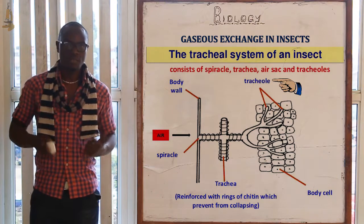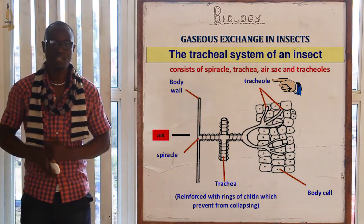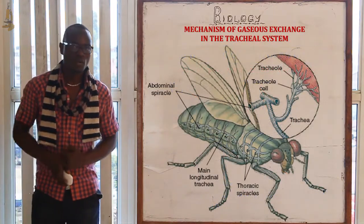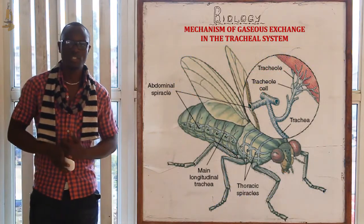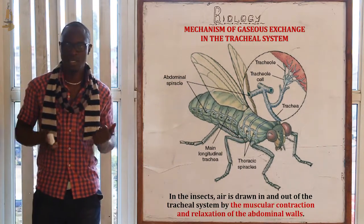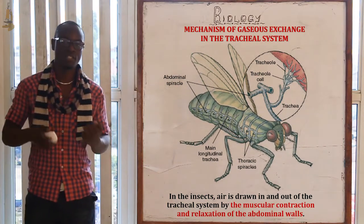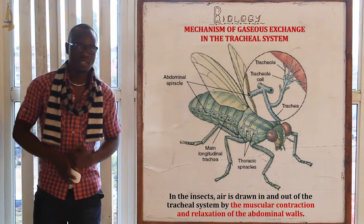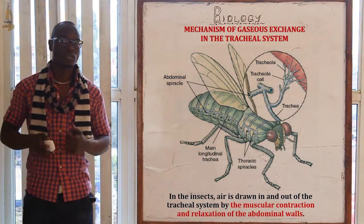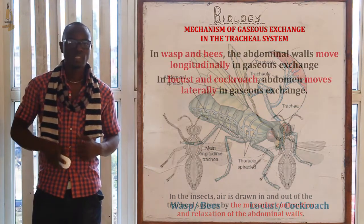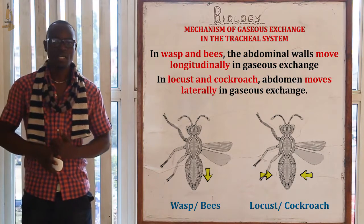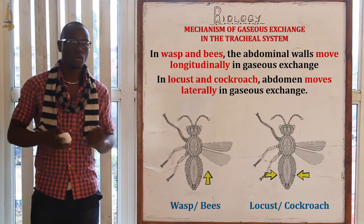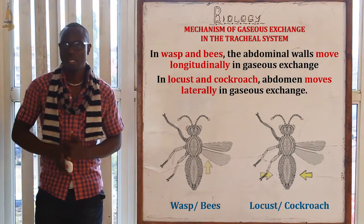The trachea then subdivides into tracheoles, facilitating the supply of materials to body tissues. Air is drawn into and out of the tracheal system by muscular movements of the abdominal walls. For example, in wasps and bees the abdominal walls move longitudinally, while for the cockroach and locust the walls move laterally.